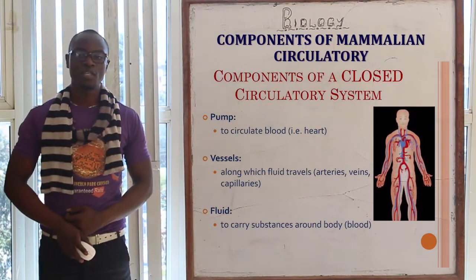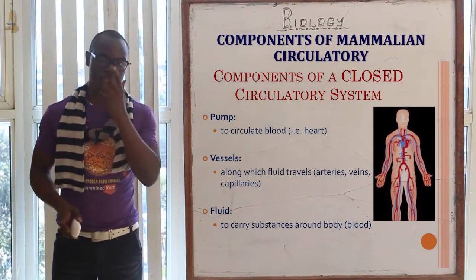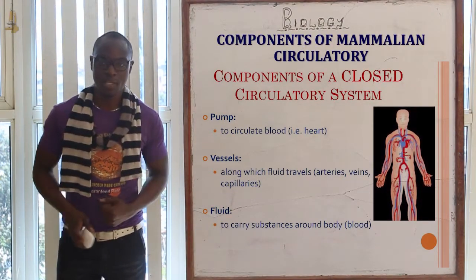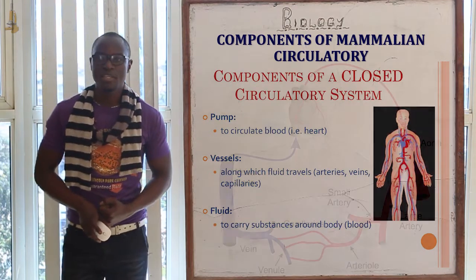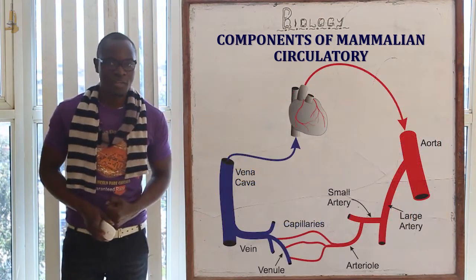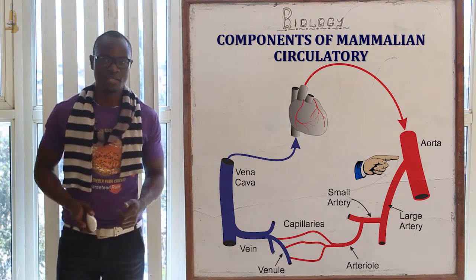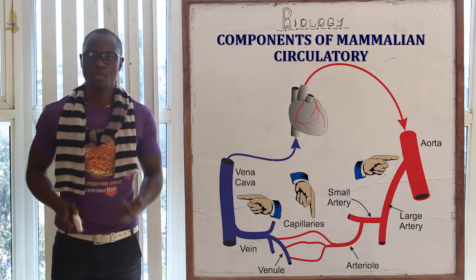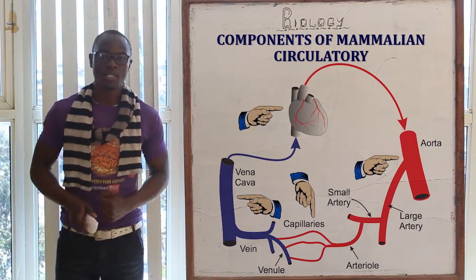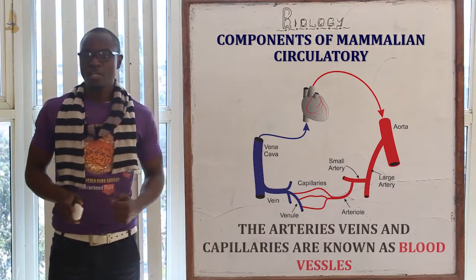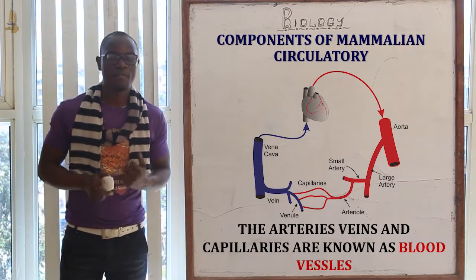Welcome to this class where we are going to discuss the components of the mammalian circulatory system. The blood circulatory system of mammals mainly comprises the arteries, the veins, and the capillaries, including a very muscular heart. The arteries, veins, and capillaries are known as blood vessels.